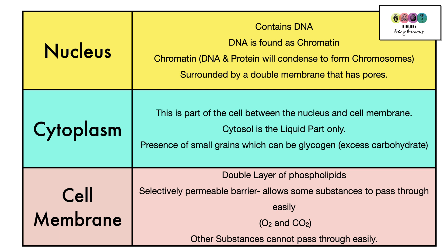We've identified the nucleus in the diagram. It contains DNA and the DNA is found as this structure called chromatin. Chromatin is DNA and protein and will condense to form chromosomes when the cell is about to divide. The nucleus is surrounded by a double membrane that has pores, little holes in it. The cytoplasm is the part of the cell between the nucleus and the cell membrane and the liquid part is called the cytosol.